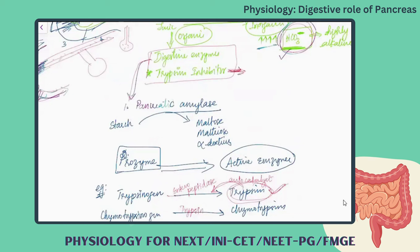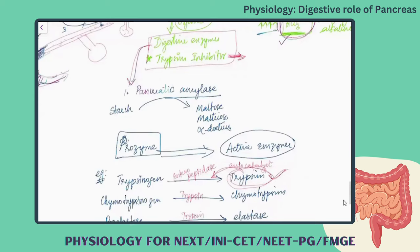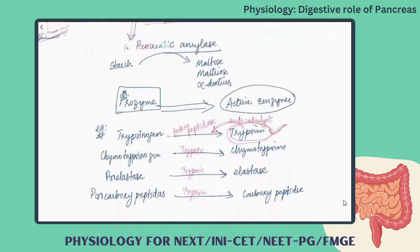The trypsin inhibitor is one of the important components in pancreatic juice that prevents the autodigestion of the pancreatic tissue itself. If the trypsin inhibitor is absent or deficient, trypsin will convert all enzymes to their active form and will also digest the pancreatic muscle, causing erosion of the pancreatic cells and resulting in pancreatitis.